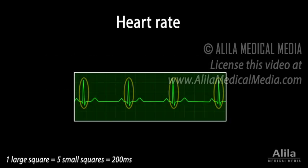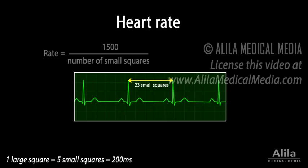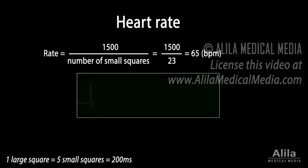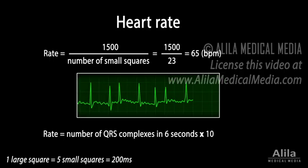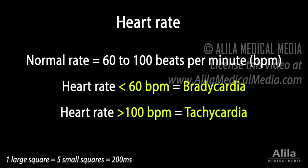For heart rate, identify the QRS complex, usually the biggest on an ECG. Count the number of small squares between two consecutive QRS complexes and calculate the heart rate with this formula. If this number is variable, count the number of QRS complexes on a 6-second strip and multiply by 10. A normal heart rate is between 60 and 100 beats per minute.